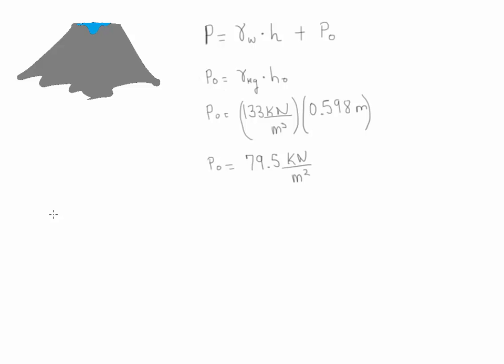Okay, so what we need to calculate now are the values of the gamma of water at that particular temperature. So we go to the back of the book and we look at that at 10 Celsius. The value of the gamma of water is given to be 9.804 kilonewtons per meter cubed.